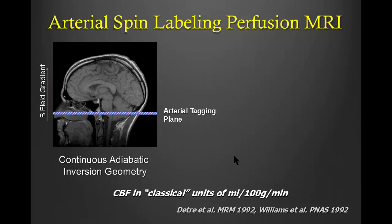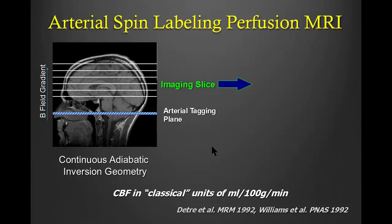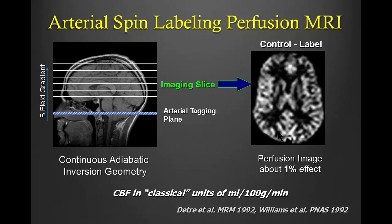Today we talk about ASL. Everybody knows how ASL works. ASL uses a radiofrequency pulse to generate a labeled bolus using an endogenous tracer. We can get a perfusion-weighted image by subtraction of the control and label images, which is then converted into absolute units of milliliters per hundred grams per minute.